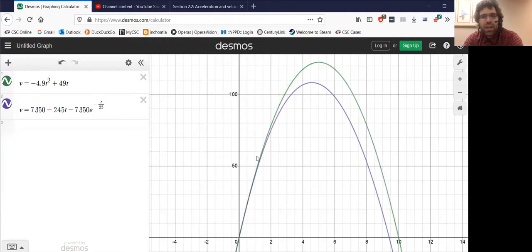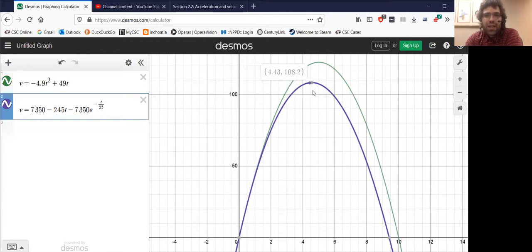As you would perhaps expect, air resistance resists the object, and it reaches a smaller maximum height sooner and hits the ground earlier.